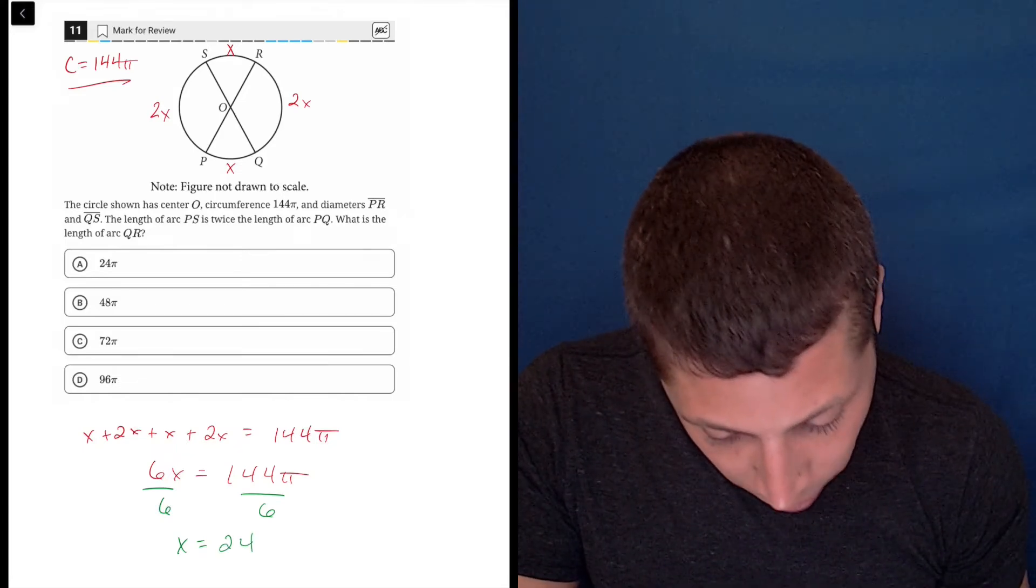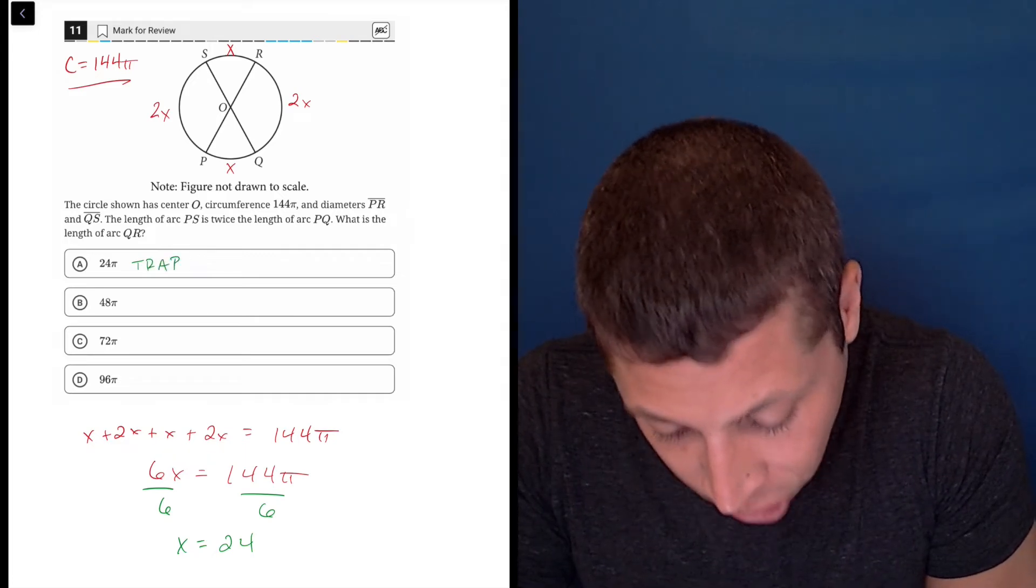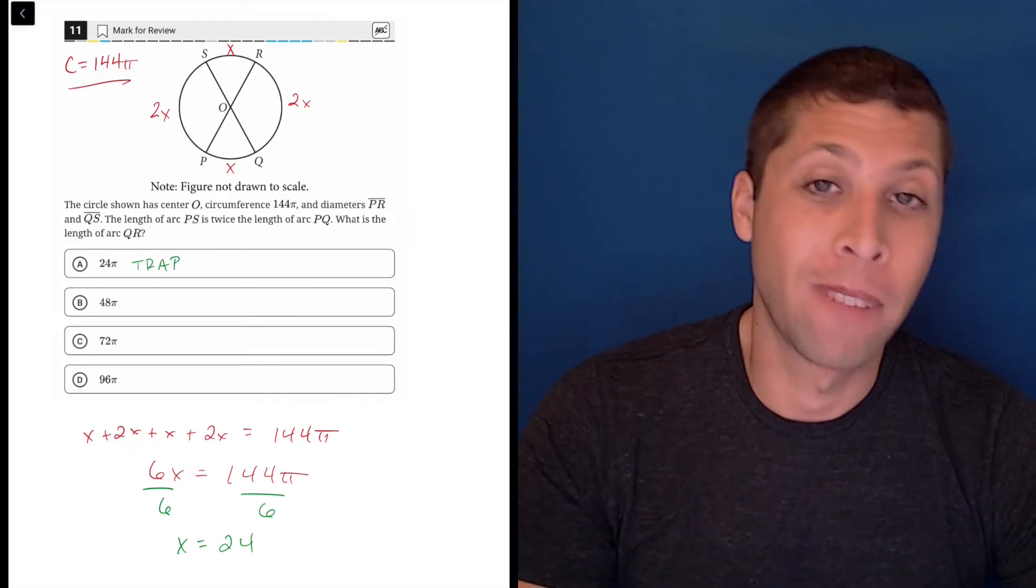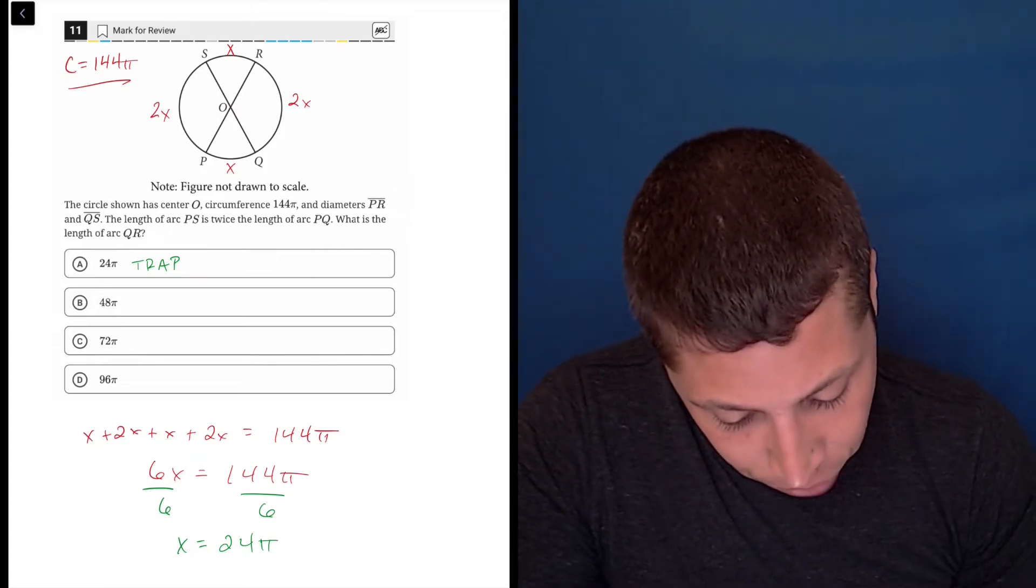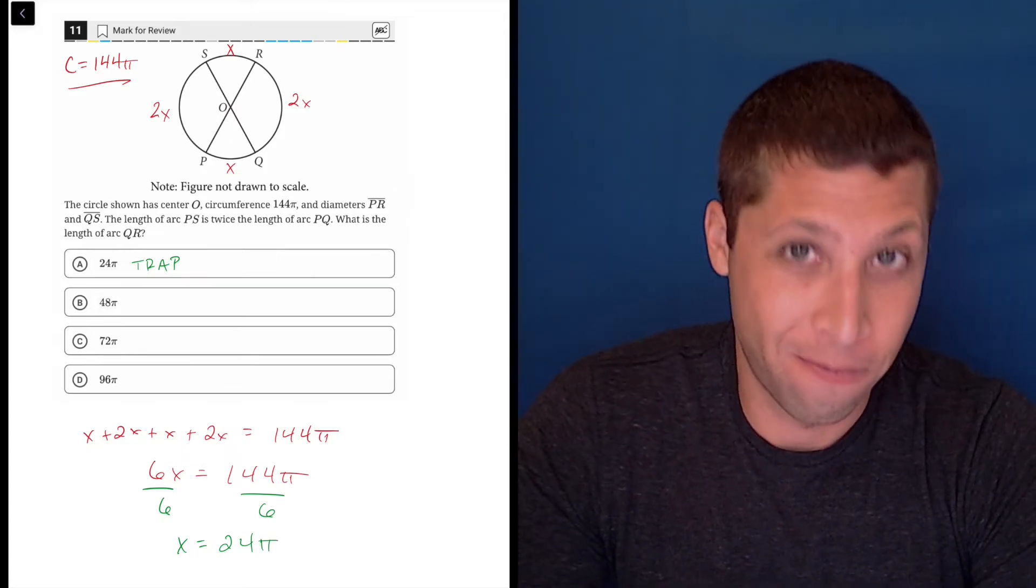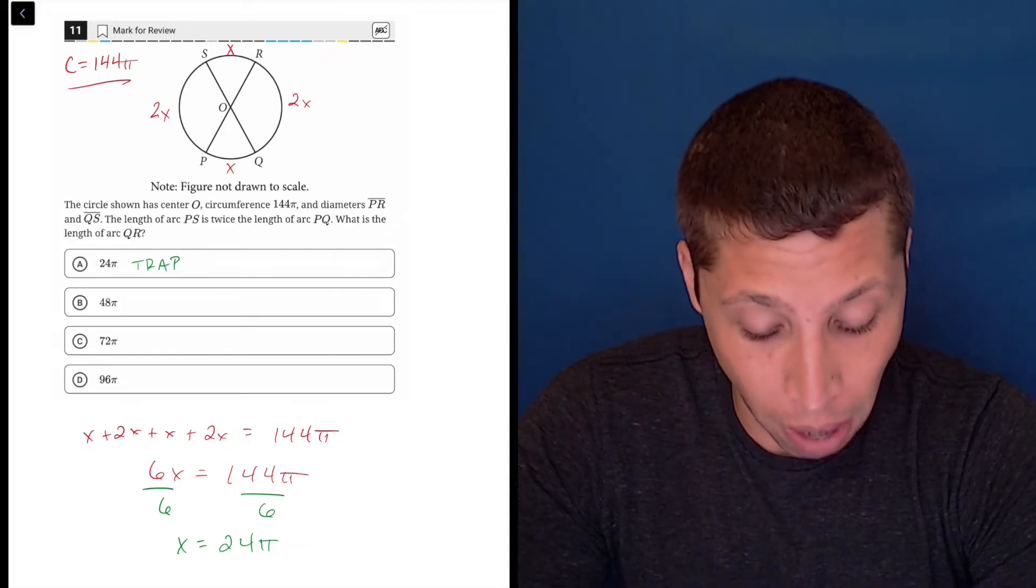So X is 24, which is choice A, and if you picked it, shame on you. Trap! We got to see this stuff coming at this stage. Now, if you think about it for a second, you can probably see the right answer.